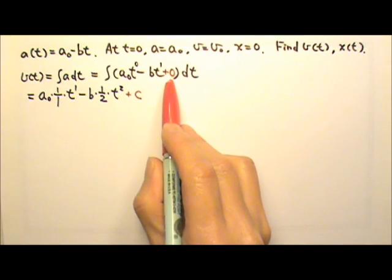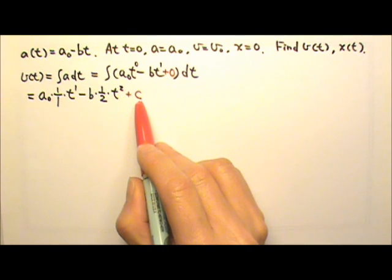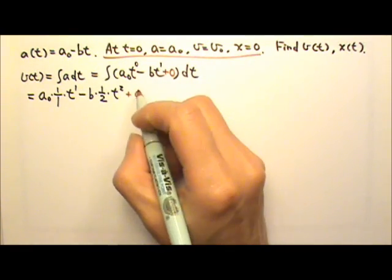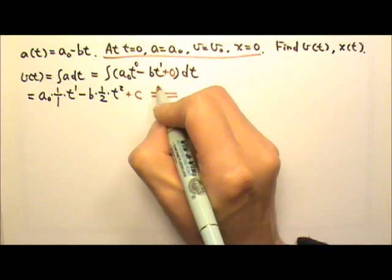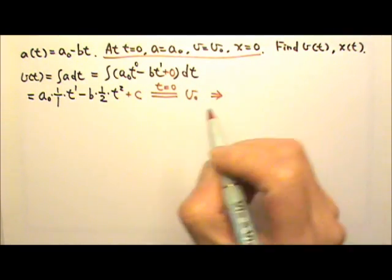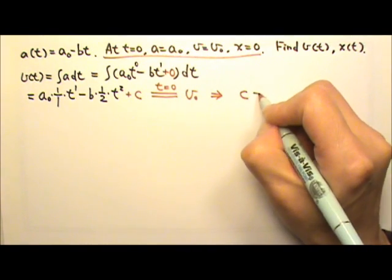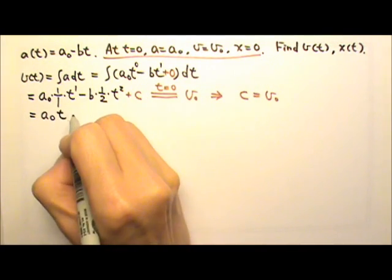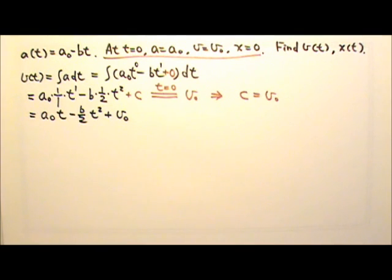This makes sense because when we take the derivative of a constant, we get 0. To find exactly what this constant c equals, we use the boundary condition provided in the problem. We are given that at t equals 0, v equals v0. Plugging in t equals 0 gives 0 minus 0 plus c equals v0, which means c equals v0. Therefore, the velocity as a function of time is v(t) = a0·t − (b/2)·t² + v0.